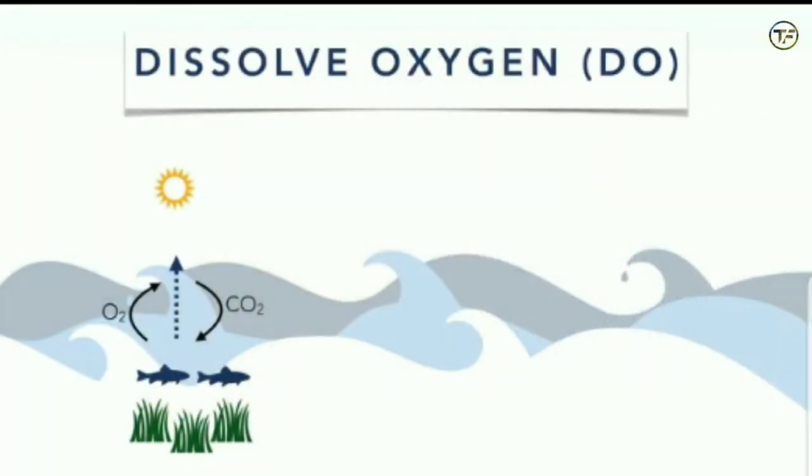There are certain times during the day and night that dissolved oxygen is low or high. During the afternoon period, dissolved oxygen is usually high. Why? Because photosynthesis has been happening all through the day, so dissolved oxygen is at its highest point — atmospheric oxygen is surplus and there is enough to be dissolved into your water.